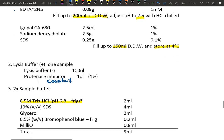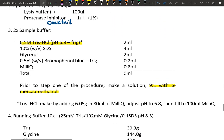The second buffer is the 2x sample buffer, made of 0.5M Tris-HCl at pH 6.8 stored in the refrigerator, 10% w/v SDS, glycerol, and 0.5% w/v bromophenol blue, usually stored in the fridge, filled with MilliQ water. The recipe volumes: 2mL Tris-HCl, 4mL SDS, 2mL glycerol, 0.2mL bromophenol blue, 0.8mL MilliQ—total of 9mL.